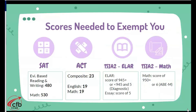Not everyone needs to take the TSI A2. Take a look at the different scores that can exempt you. For the SAT, if you have an evidence-based reading and writing score of at least 480, you would be exempt from the English section. If you have at least a 530 on the math, you would be exempt from the math. For the ACT, a composite score of 23 is required, or an English and math score of 19 in each section.